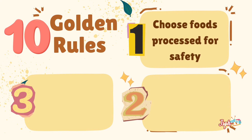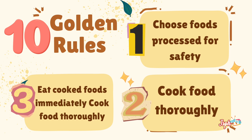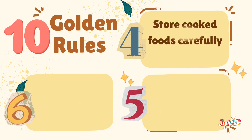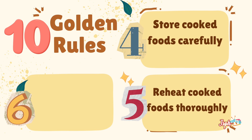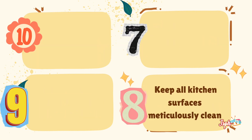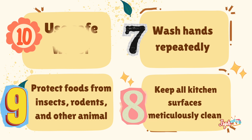We have 10 golden rules. First, choose food processed for safety. Second, cook food thoroughly. Third, eat cooked food immediately. Fourth, store cooked food carefully. Fifth, reheat cooked food thoroughly. Sixth, avoid contact between raw foods and cooked foods. Seventh, keep all kitchen surfaces meticulously clean. Eighth, protect foods from insects, rodents, and other animals. And use safe water.